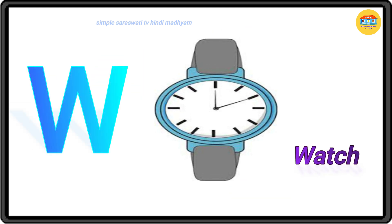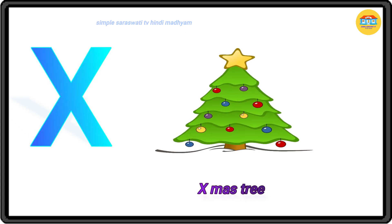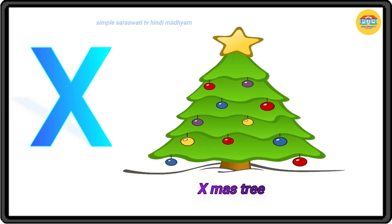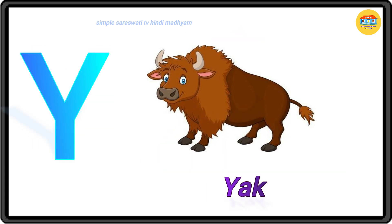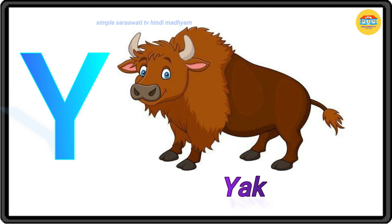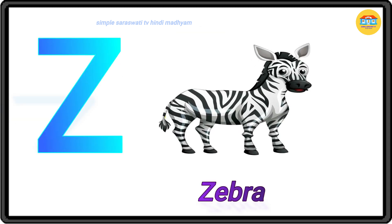V for van, W for watch, X for axonokstree, Y for yak, Z for zebra.